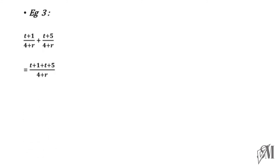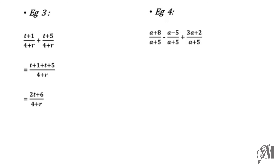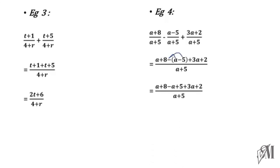Next example: (t + 1) over (4 + r) plus (t + 5) over (4 + r). The denominator is the same, so we write the numerators in one line. t plus t is 2t, 1 plus 5 is 6, giving 2t + 6 over (4 + r). In the fourth example all denominators equal (a + 5). Since there is a subtraction, put a bracket before simplifying, then remove the bracket: minus into a gives minus a, and minus into minus 5 gives plus 5.